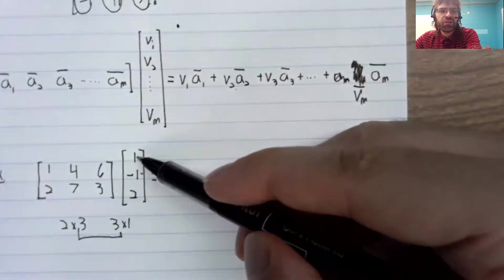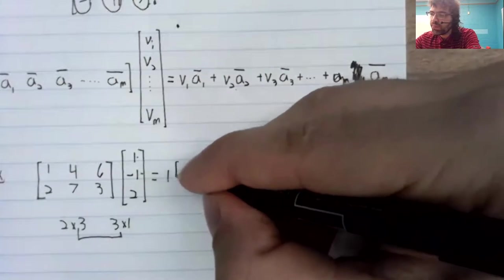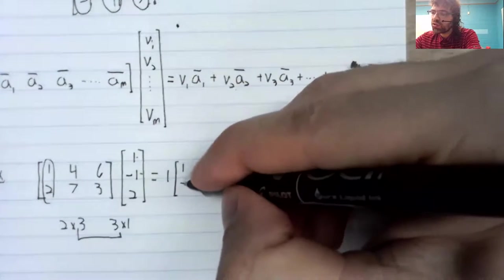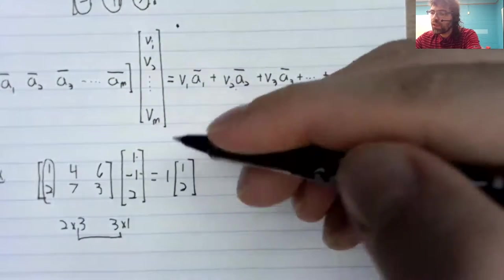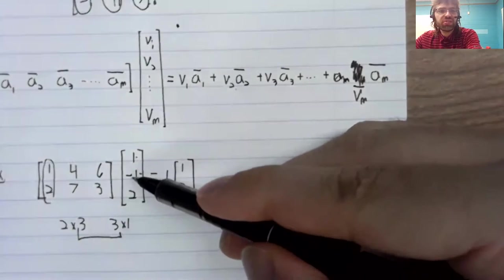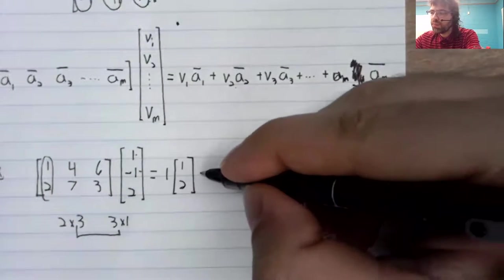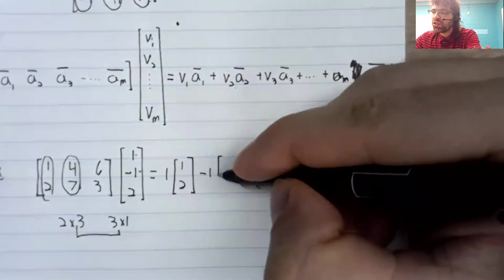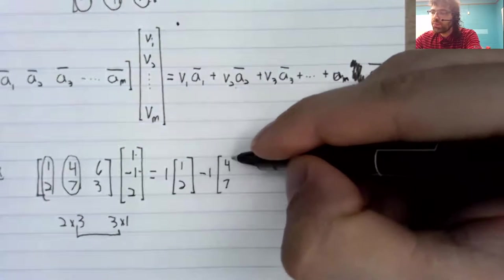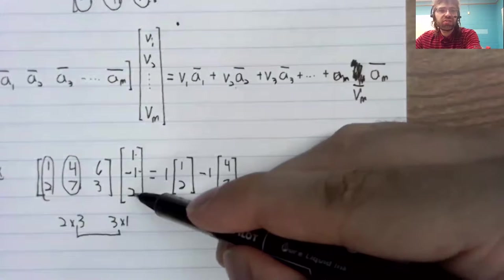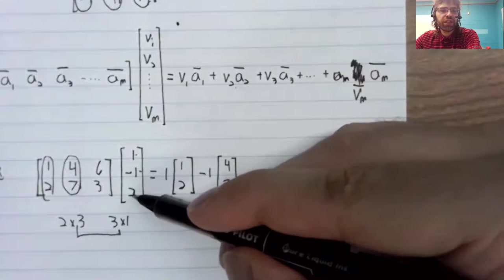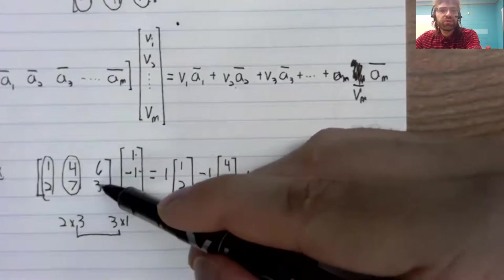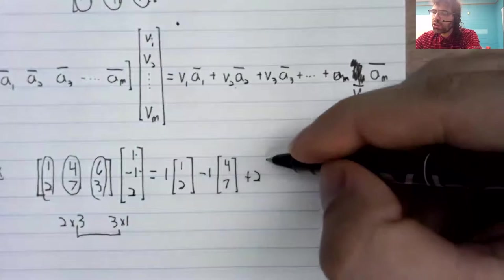And as we just defined multiplication, we should take this first entry times this first column. Plus this second entry times this second column. Plus this third entry times this third column.